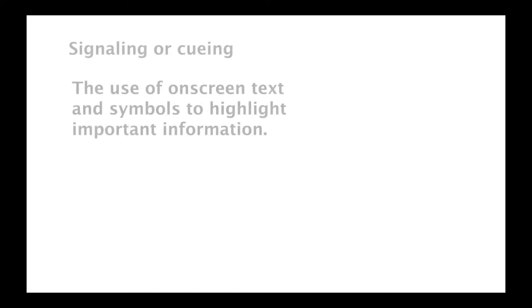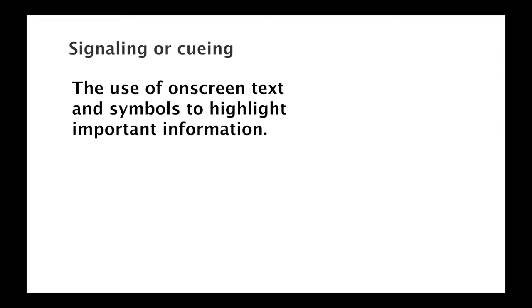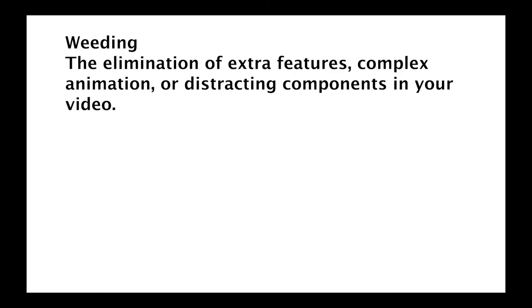To reduce extraneous load, as the instructional designer and possibly the video creator, you want to do the following. Use signaling or cueing — the use of on-screen text or symbols to highlight important information. You can also engage in segmenting or chunking of information, either into separate videos or providing students shortcuts to relevant information, which you will find in the descriptions of this video. Next is weeding: the elimination of interesting but extraneous information, such as no extra features, complex animations, or distracting music.